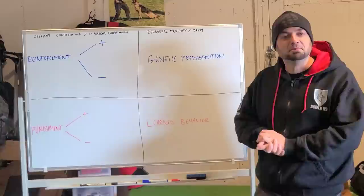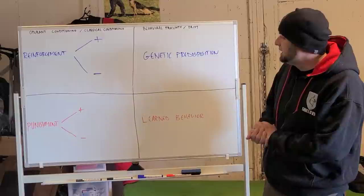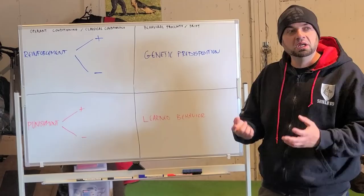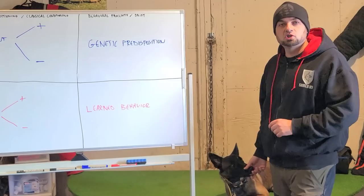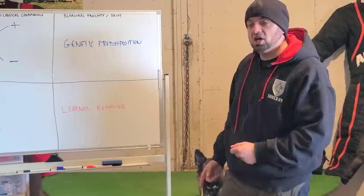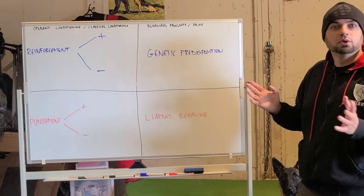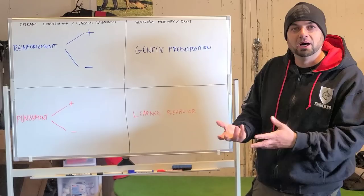Now we have behavioral probability and drift, which falls into genetic predisposition and learned behavior. Every dog you get as a trainer has genetic predispositions, and the breed and breeding of that dog will determine them. This Malinois I have here likes to bite things, likes toys, likes fast-moving objects, chases squirrels, and is very sensitive and reactive to stimuli. That's genetic predisposition. If you know anything about a Malinois, none of those things are a surprise.